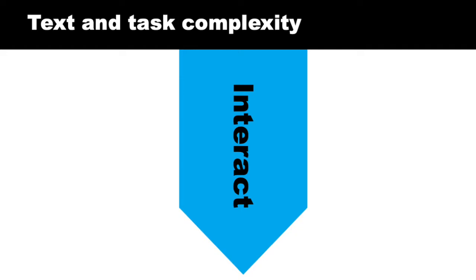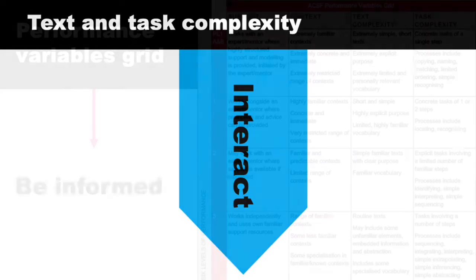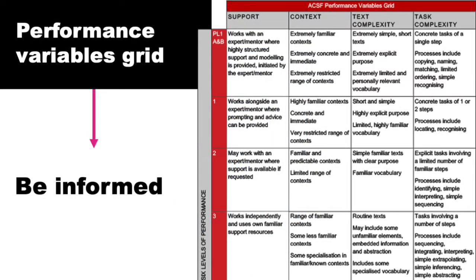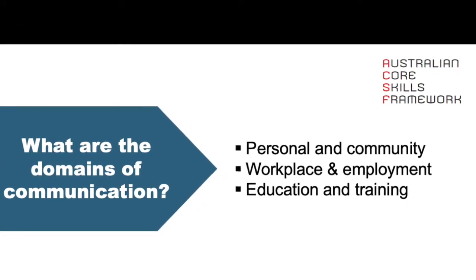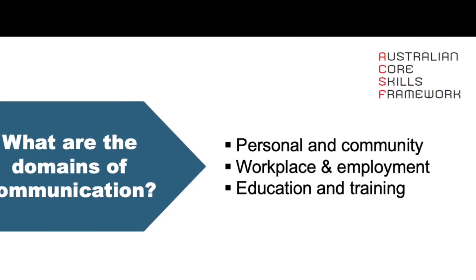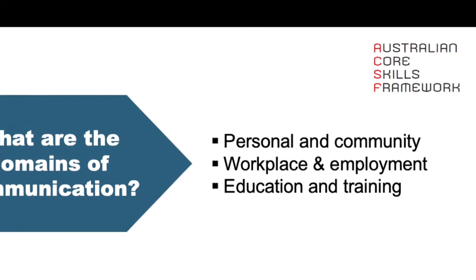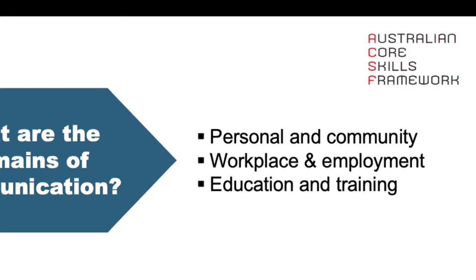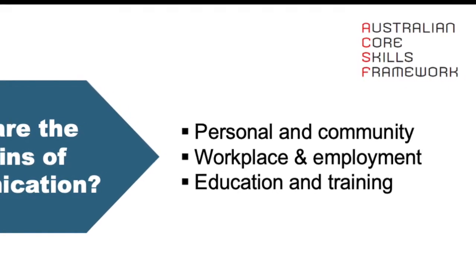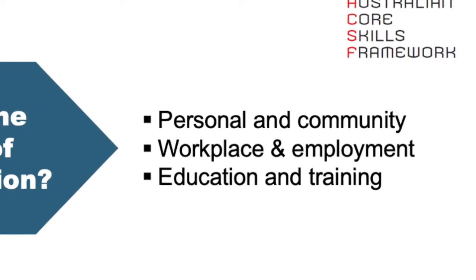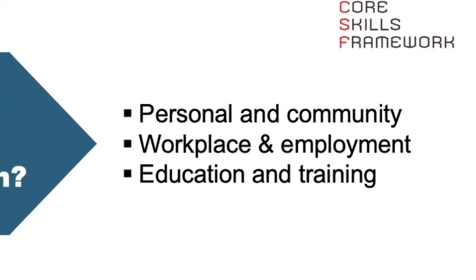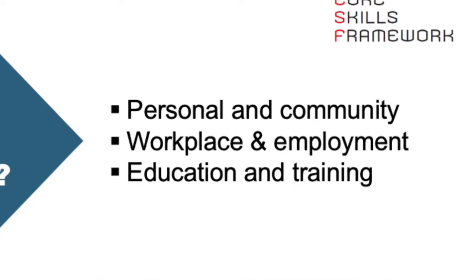When you're working with the ACSF, you must always be informed by the performance variables grid — it's absolutely critical. The third key feature of the ACSF are the three domains of communication, which are broad contexts within which a core skill may be used. They are personal and community, workplace and employment, and education and training.